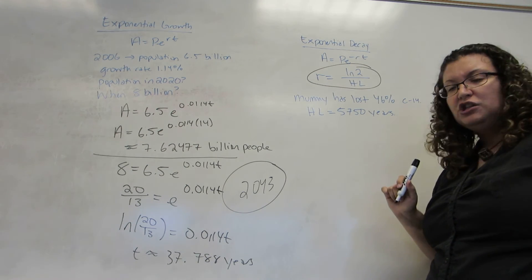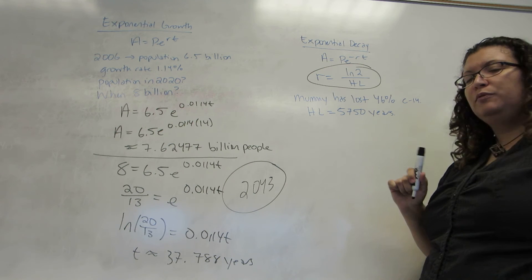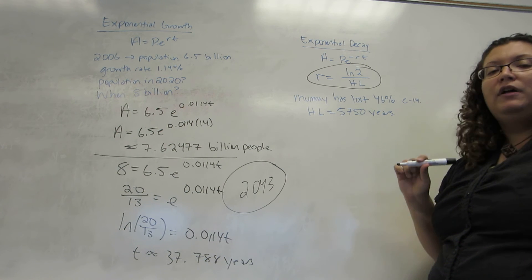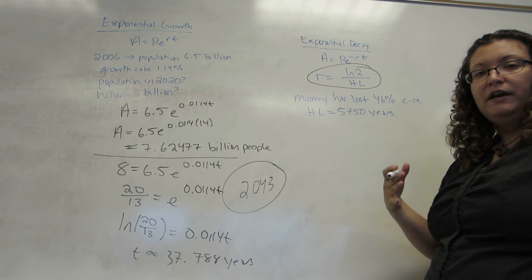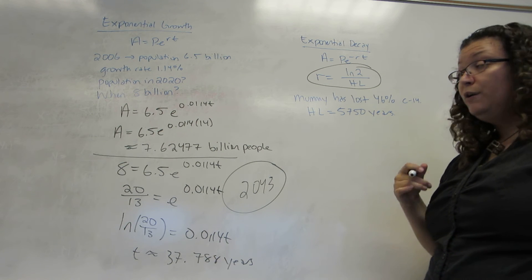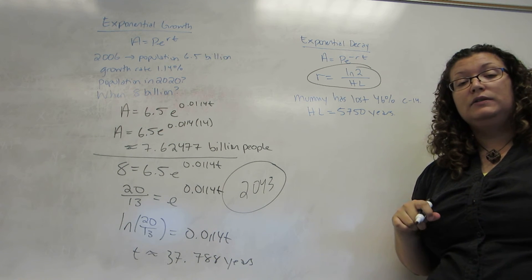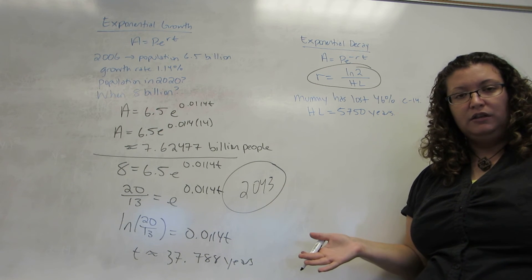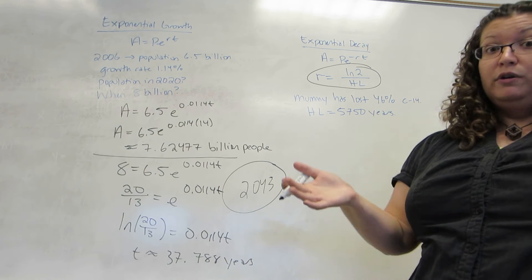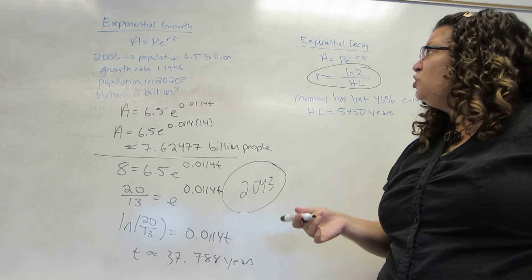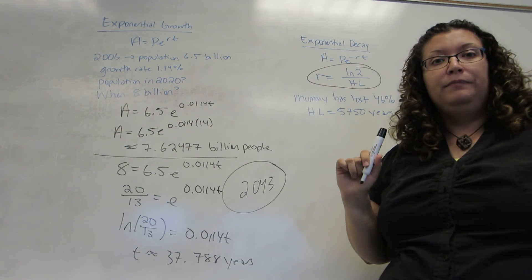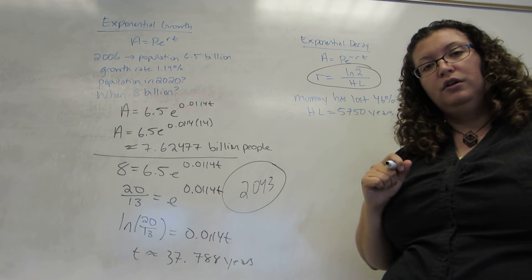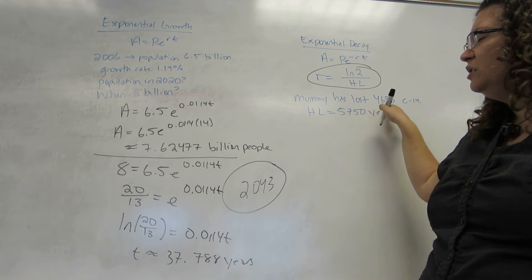So, suppose we found a mummy in Egypt that has lost 46% of its carbon-14. Given that the half-life of carbon-14 is 5,750 years, we want to estimate how old the mummy is. Now, they didn't tell you how much carbon-14 the mummy has, and we don't know how much it started with. So, we don't actually know A and P, but this is the beautiful thing. We don't need to know exactly what they are. We just need to know the percentage that is left.